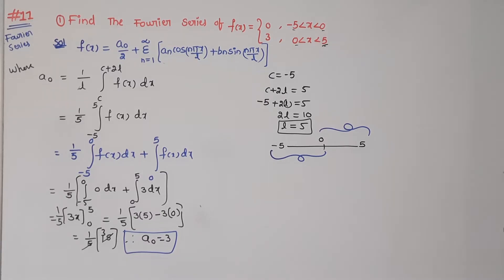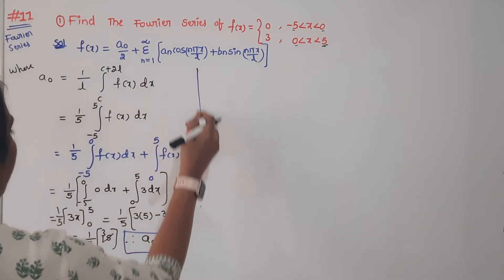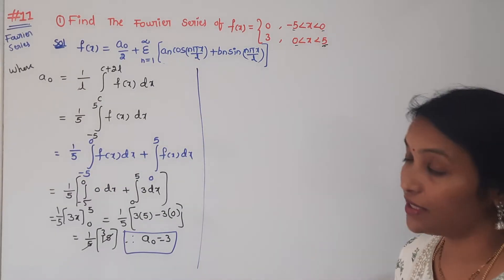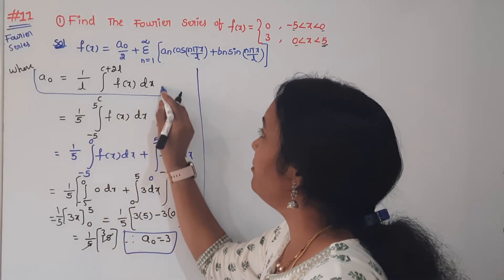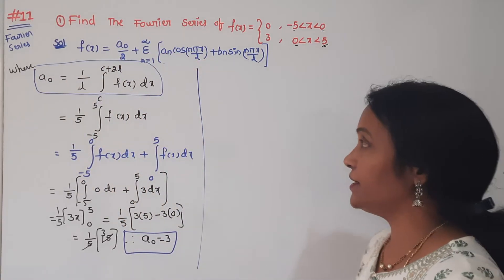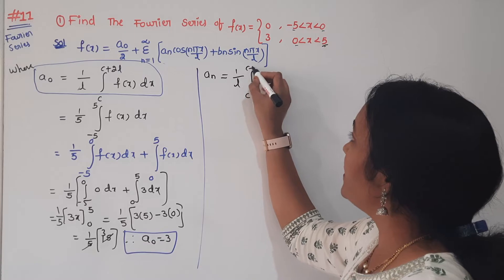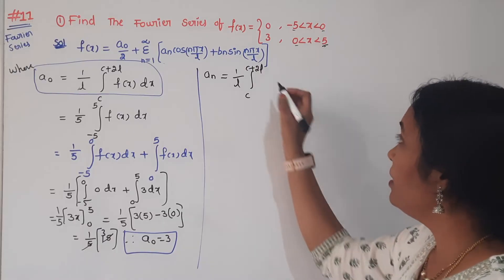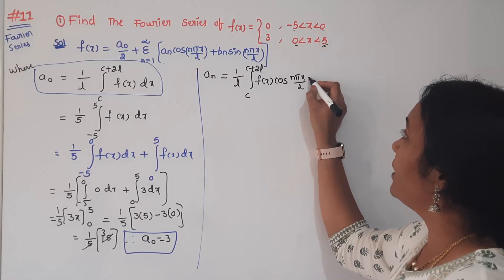Now we are going to calculate Aₙ. The standard formula for the change of interval is: Aₙ = 1/L, integral from C to C plus 2L, of F(x) cos(nπx/L) dx. We already wrote the Fourier series with A₀, Aₙ, and Bₙ. Now we find each one individually.